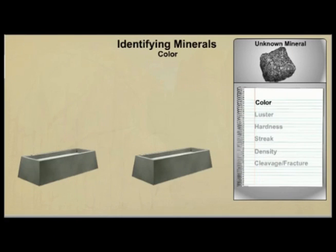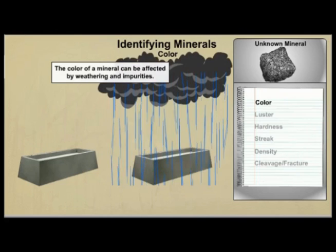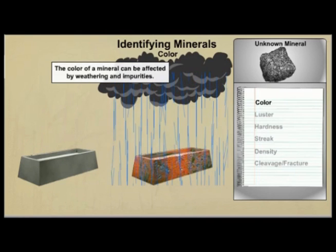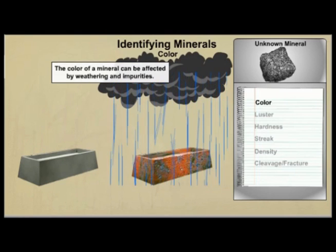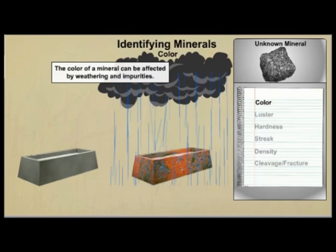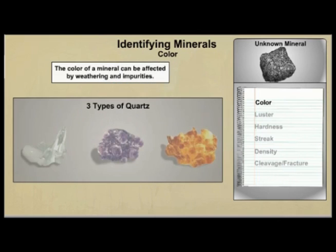Color can be used to determine the identity of a mineral, but you need to be careful because the color of a mineral can be affected by weathering, which is wear resulting from exposure to things like wind and water, as well as by impurities in the mineral.